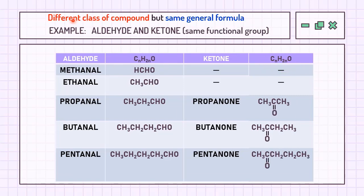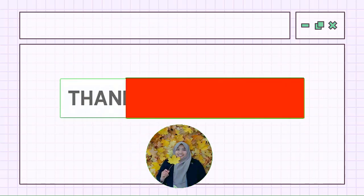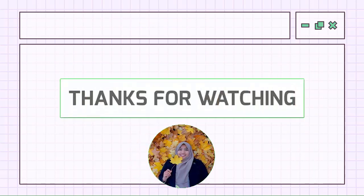There are cases where different classes of compounds or compounds with different functional groups share the same general formula. Do not mistake compounds having the same general formula as belonging to the same homologous series. For example, aldehyde and ketone have the same general formula, but since they are different classes of compounds, their homologous series are still different. That's all for subtopic 4.2, Functional Groups and Homologous Series. Thank you!